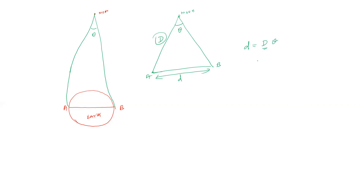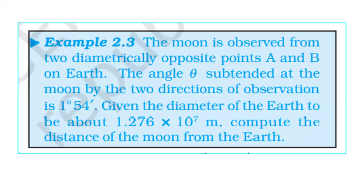The distance of the moon from the Earth is equal to d divided by theta.